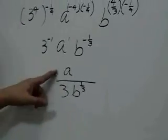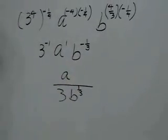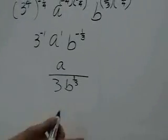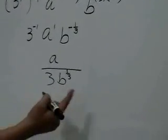3 to the negative 1 is 1 over 3, and b to the negative 1 third is 1 over b to the 1 third.